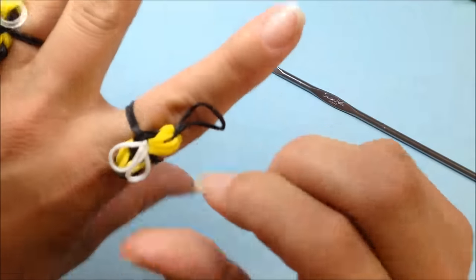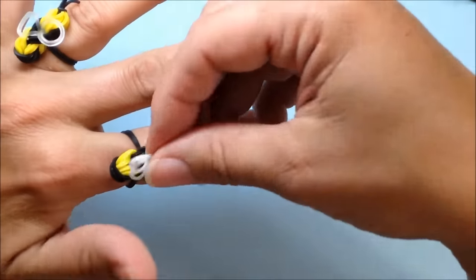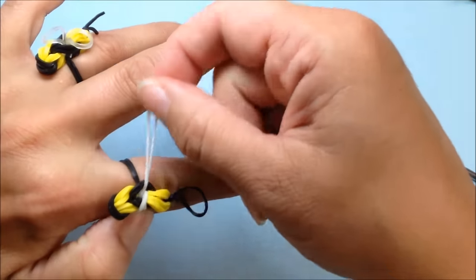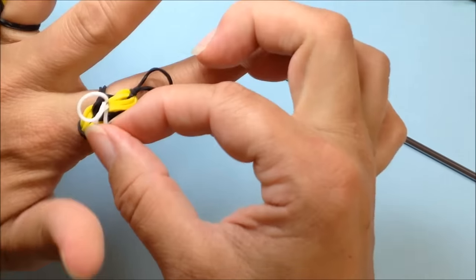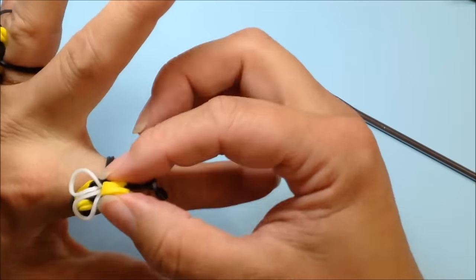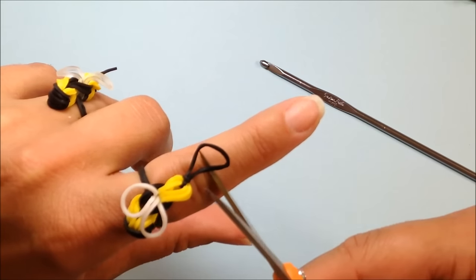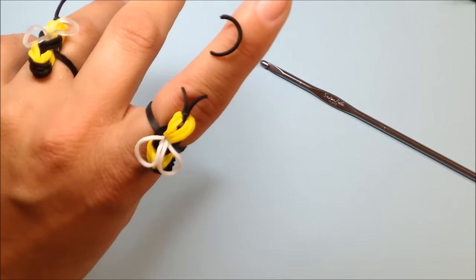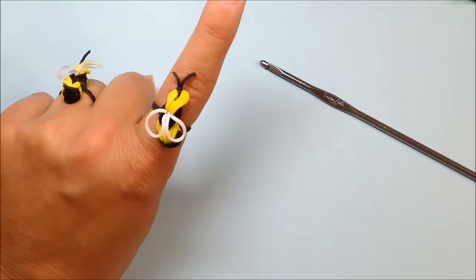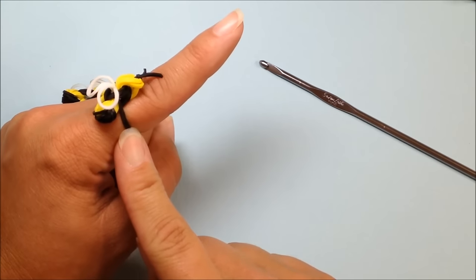And you've got a cute little ladybug. I'm sorry, cute little bumblebee. Still thinking I'm making a ladybug today. Cute little bumblebee. And all you have to do is cut off your antenna with a pair of scissors. And there we've got an adorable little bumblebee ring.